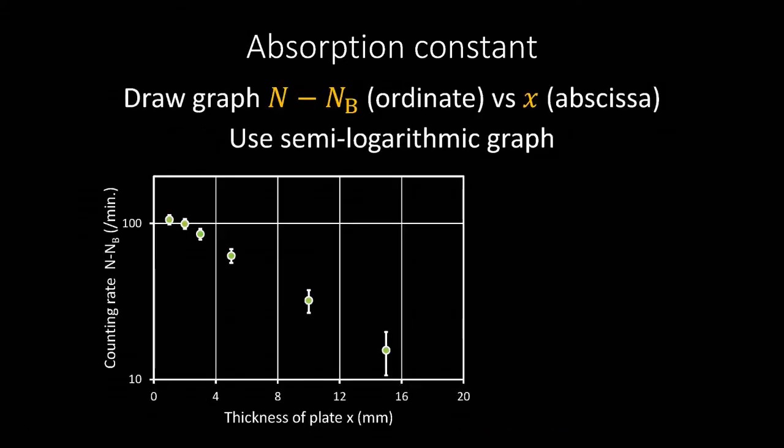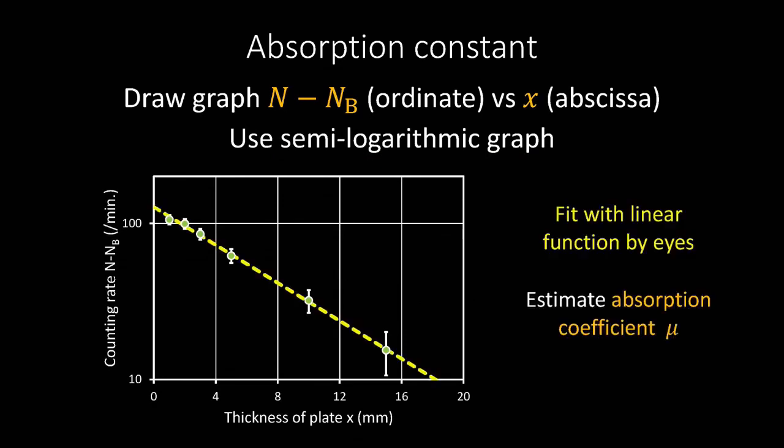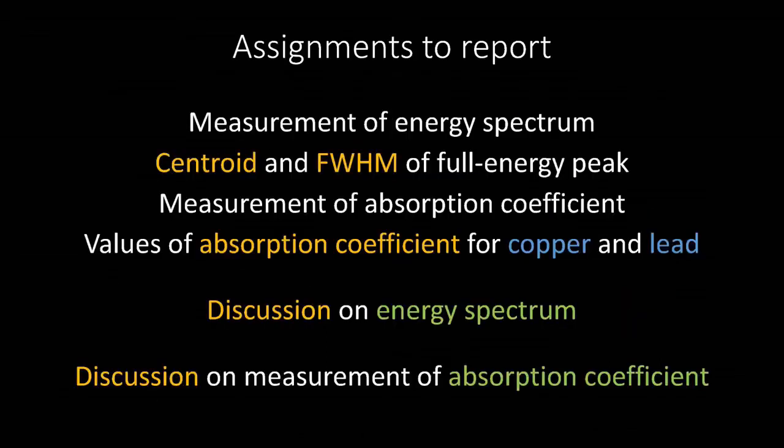Draw a graph where the horizontal axis is the thickness of the absorber, X, and the vertical axis is N minus NB, as calculated earlier, with the error bars attached. Note that we will be using a semi-log graph. After plotting, fit a straight line by eyes and estimate the absorption coefficient mu from the slope. Please summarize these in your report. Please read the textbook for more details.